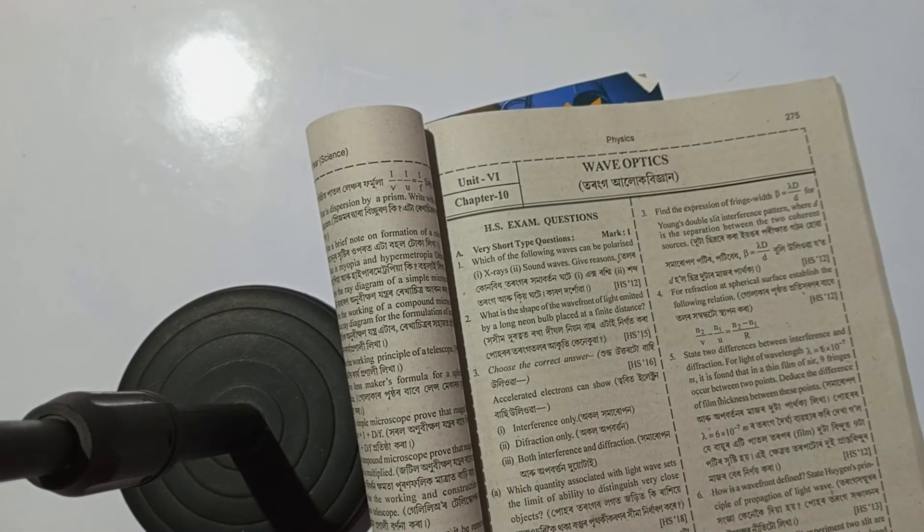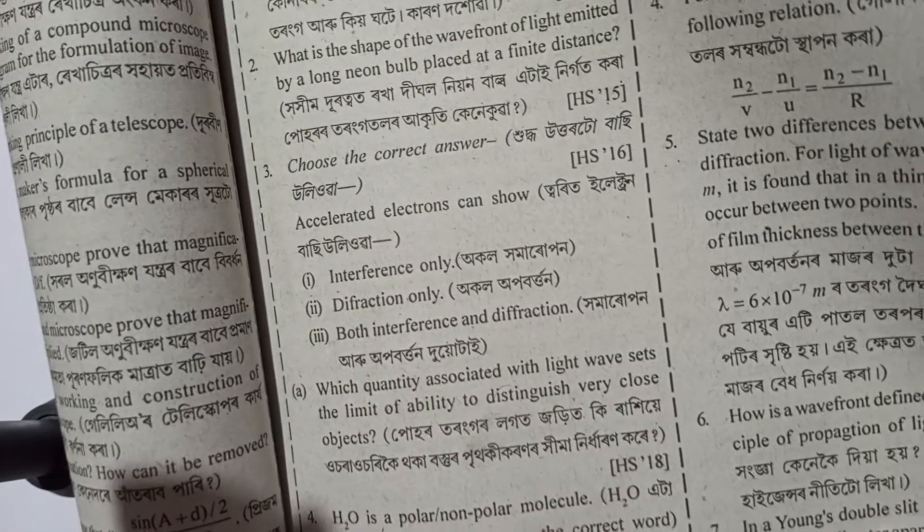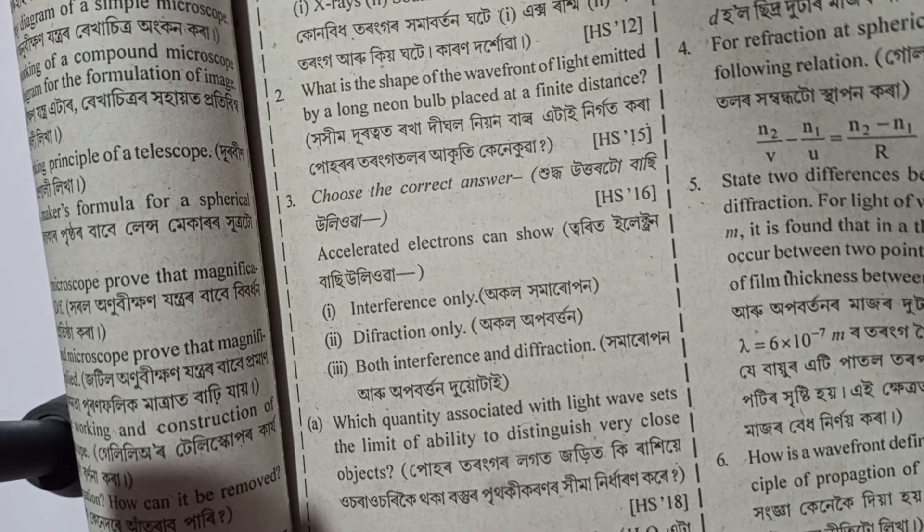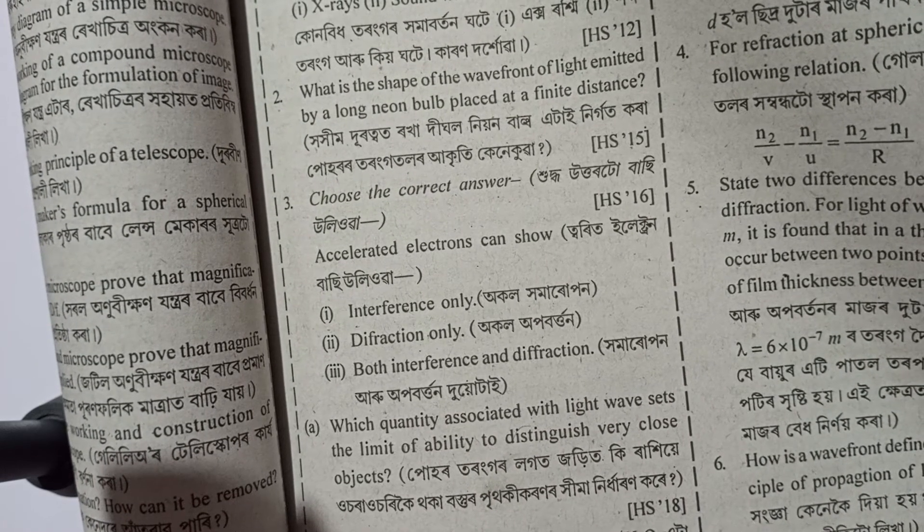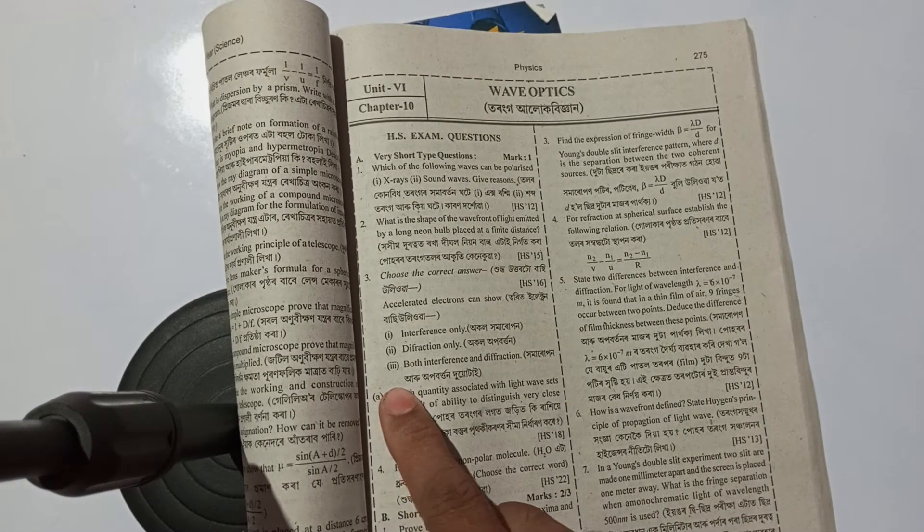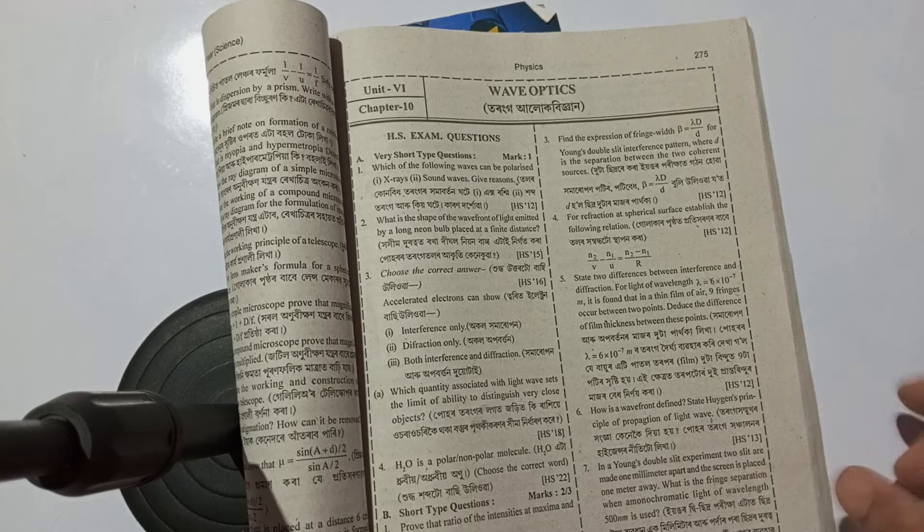Next question: choose the correct answer. Accelerated electrons can show interference only, diffraction only, or both interference and diffraction. Here, the answer is C: both interference and diffraction.